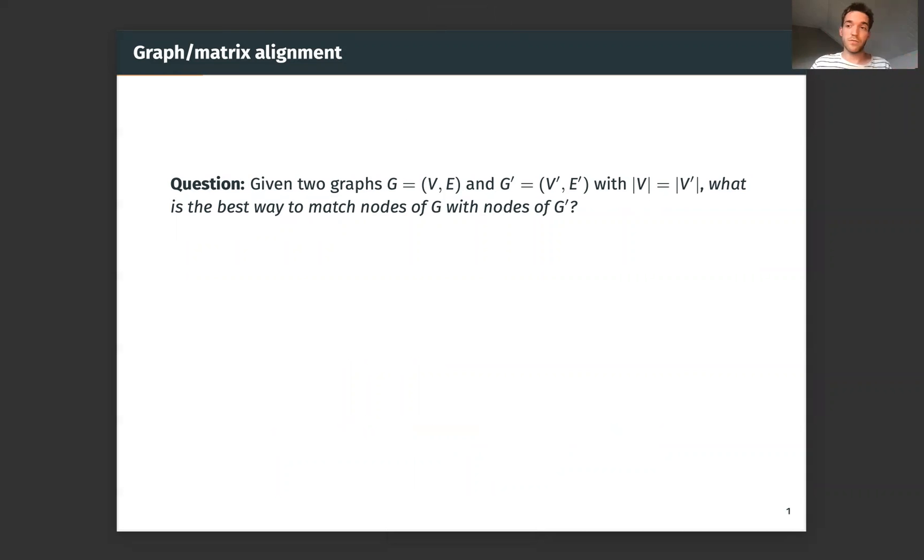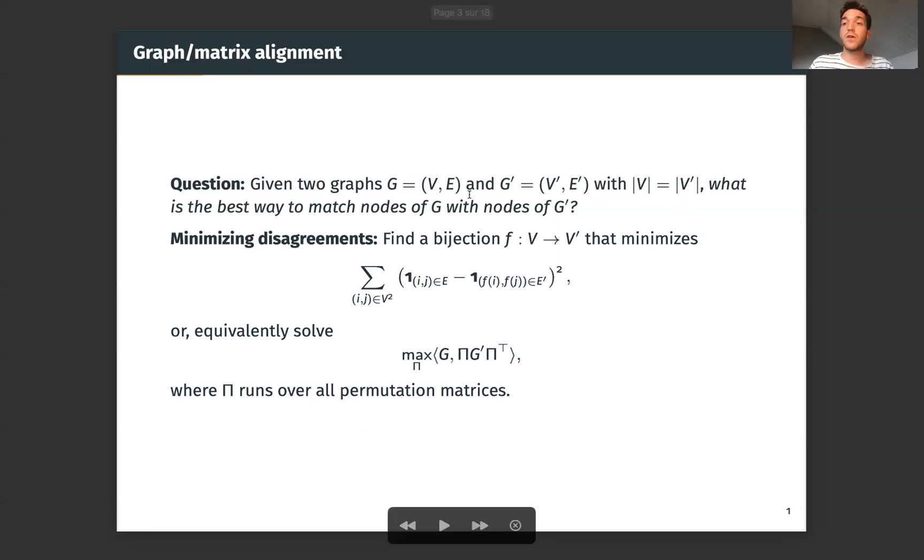What is the best way to match nodes of the first graph with the nodes of the second one? So this is a very natural question and one answer to this question can be, we'll find a bijection f from the vertices of G to the vertices of G' that minimizes the number of disagreements. In other words, we want a bijection f such that if i and j are connected in the first graph G, f(i) and f(j) are also likely to be connected in the second graph G'.